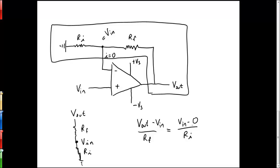We can manipulate this, we can multiply RF to the other side and take V in to the other side and we get V out minus V in over V in is equal to RF over RI, which with a little more manipulation shows us that the ratio of V out to V in, which is just our gain, is equal to one plus RF over RI.